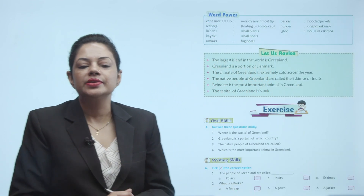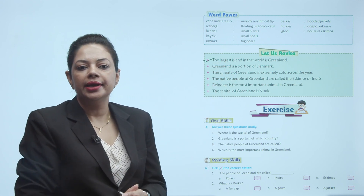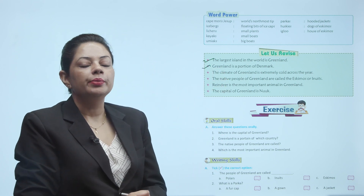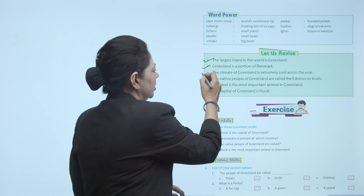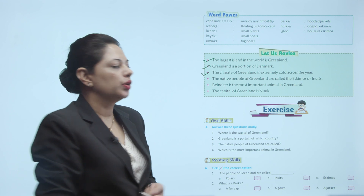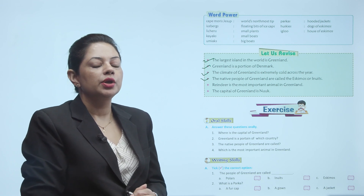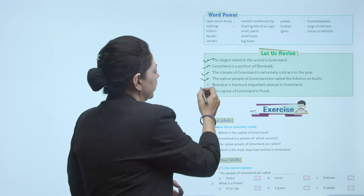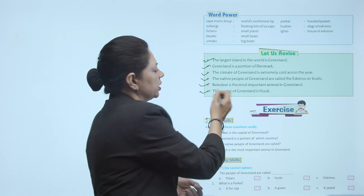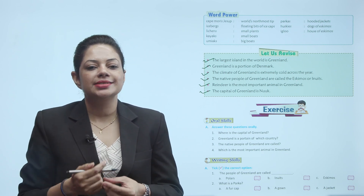Let us revise the chapter. The largest island in the world is Greenland. Greenland is a portion of Denmark. The climate of Greenland is extremely cold across the year. The native people of Greenland are called the Eskimos or Inuits. Reindeer is the most important animal in Greenland. The capital of Greenland is Nuuk. I hope bachon, aapko yeh chapter samajh aaya hoga. Phir se isko read karenge aur exercise ki practice khud karenge.